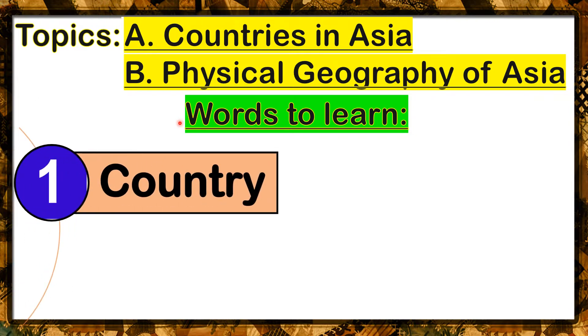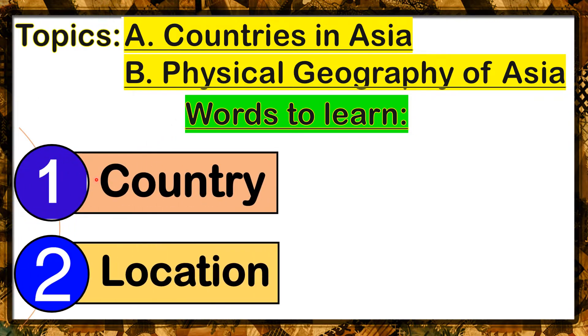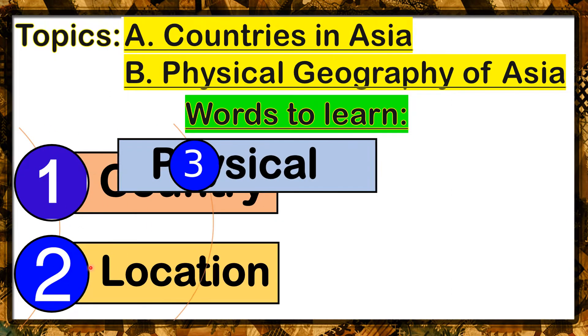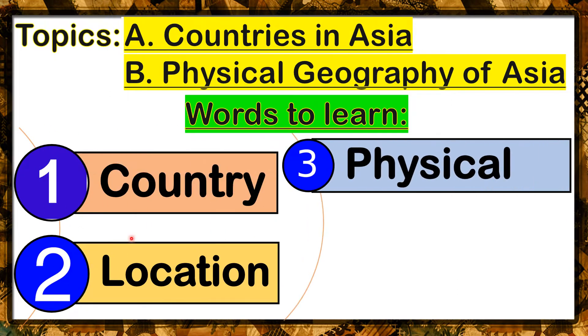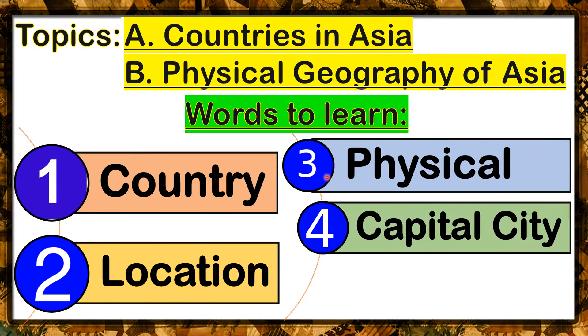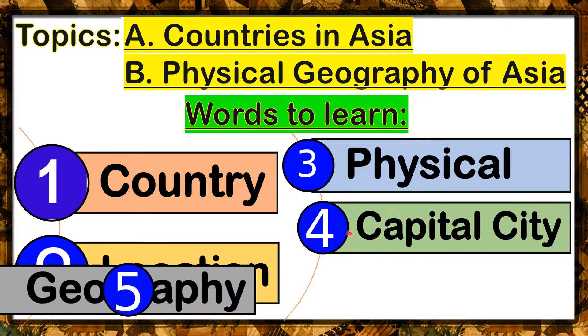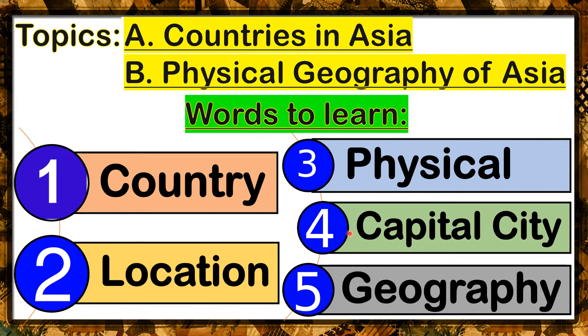Number one: country. Number two: location. Number three: physical. Number four: capital city. And number five: geography.